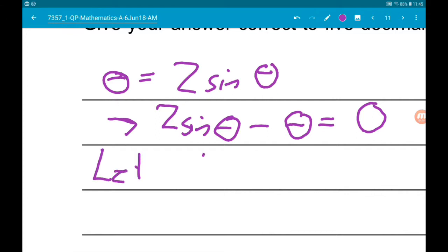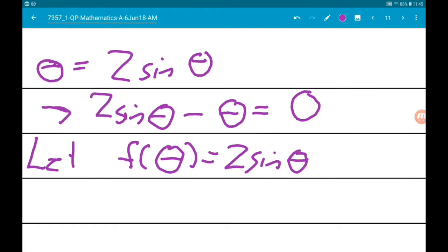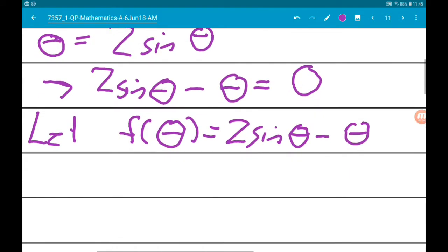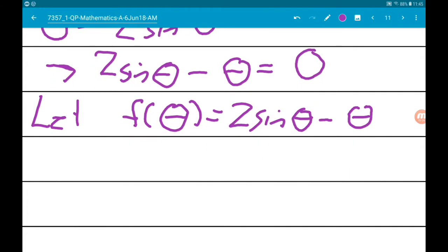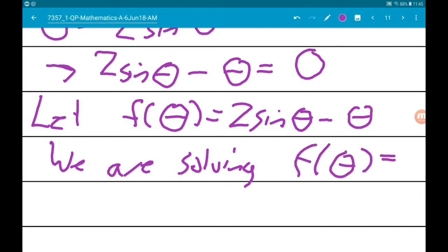Now when you're using the Newton-Raphson method you are trying to find solutions for a function equal to zero. So if we take away theta we get that two sine of theta minus theta is equal to zero. Now we can let f of theta equal two sine of theta minus theta.